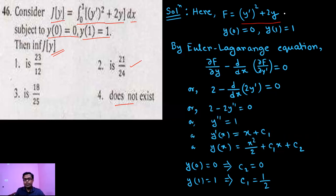So F equals to (y')² plus 2y and the two boundary conditions are y(0) equals to 0 and y(1) equals to 1.